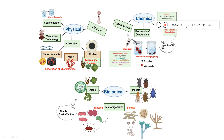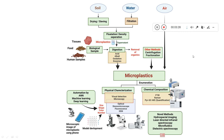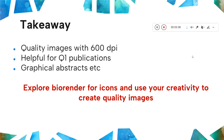Here is one more image I created just to show you some examples of how you can explore and create good quality images. In this way you can create a lot of images — your creativity in how you use the icons definitely matters. This is how you can create very good quality images using BioRender. Even 600 DPI images can be created.